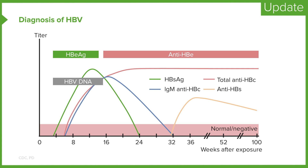The IgM antibody against the core antigen usually appears with the onset of symptoms. While the IgM antibody levels fall, the IgG antibody is indefinitely positive in individuals with past hepatitis B infection. The antibody against the surface antigen (anti-HBs) appears weeks after the disappearance of the surface antigen. The period between disappearance of the surface antigen and appearance of anti-HBs is called the window period. During this period, only anti-HBc can be found in the blood.